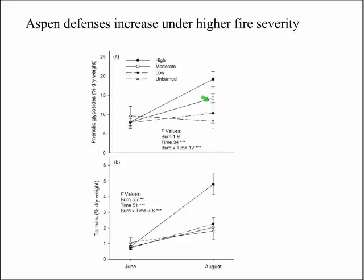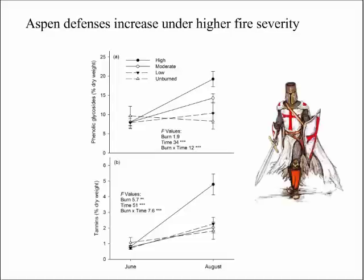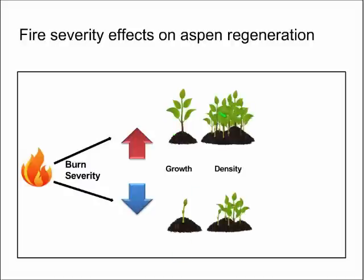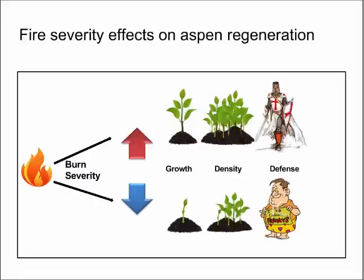The other important factor is that Aspen changes its expression of defense compounds based on burn severity. Looking at the expression of phenolic glycosides and condensed tannins as a function of burn severity — unburned, low, moderate, and high severity — in early summer there's no difference in expression as a function of burn severity. But as you progress towards late summer, Aspen suckers regenerating in high burn severity environments express much higher levels of defense compounds. We think this higher level of defense chemistry expression is also deterring the herbivores.